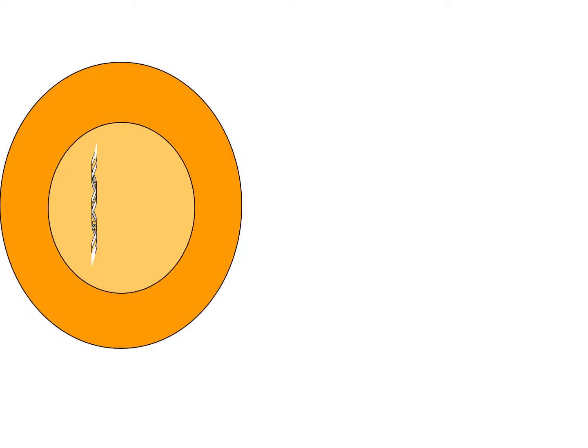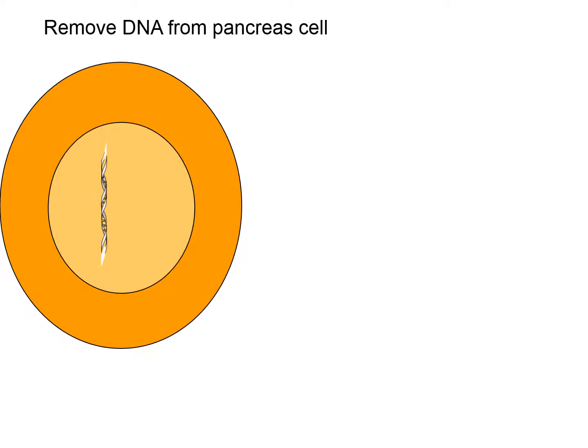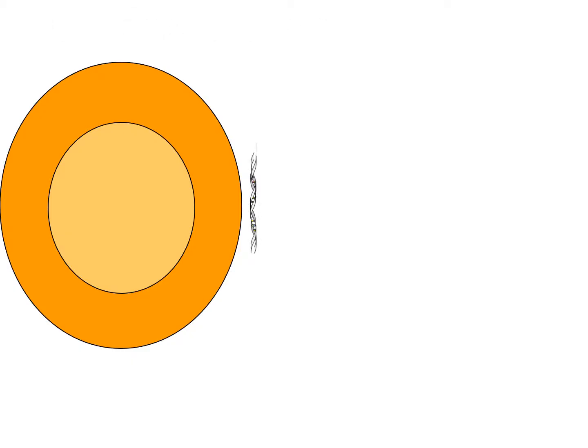Once you've obtained some cells, you then have to extract the DNA — a very simple process. Now there's an awful lot of DNA inside one cell: about 30,000 genes, and you only need the insulin gene. There's also a lot of DNA that is non-functional, called junk DNA. In order to proceed, we just have to locate the insulin gene, and we can do that by using some enzymes.